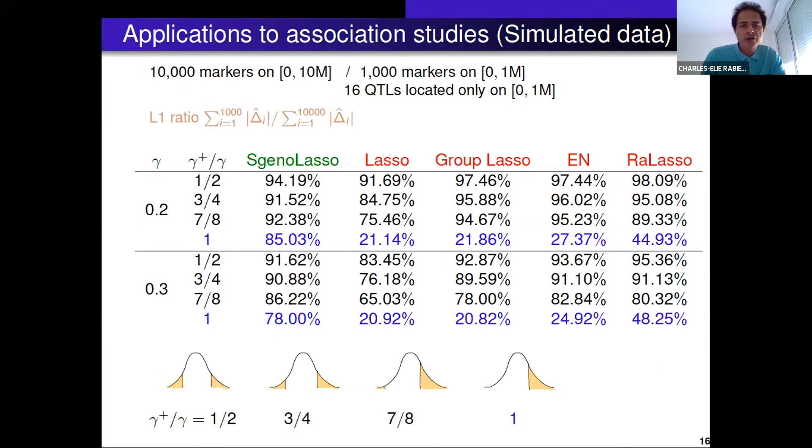Some applications on simulated data. We simulated a genome of 10 Morgans. We placed 16 QTLs on the first Morgan and we considered many methods. We reported the L1 ratio, which is the ratio of the estimated effect on the first Morgan over the estimated effect L1 norm of the estimated effect along all the genome. What you can see here, the blue lines, you have to have a look - the blue lines report to this case where I genotype only the best individuals. You can see that only the SG no lasso has an L1 ratio of 85 percent and other methods are around 22 percent. Other lasso methods did not work and only our method works in this case. That's the genomic selection case.